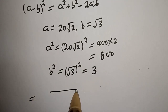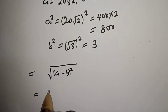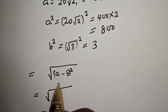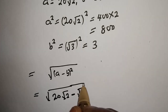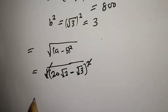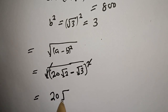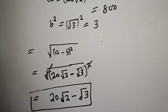Therefore, the expression equals the square root of (a minus b) squared, which simplifies to a minus b — that is, 20 root 2 minus root 3. This is the final answer. Thank you for watching; don't forget to like, share, comment, and subscribe. Bye bye!